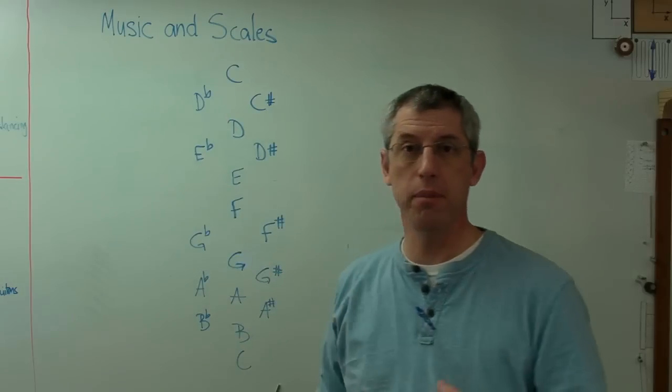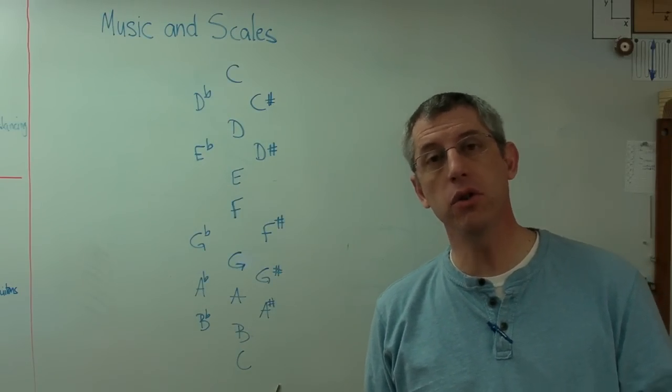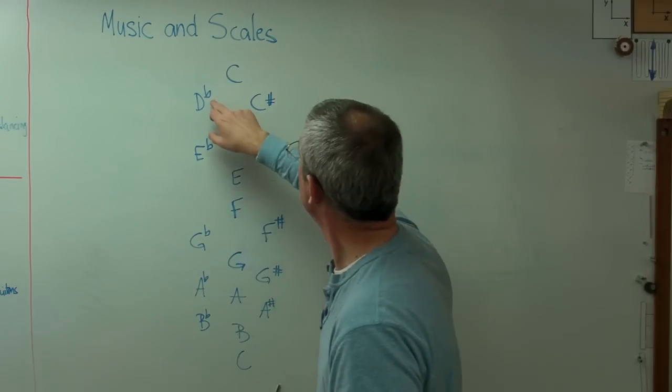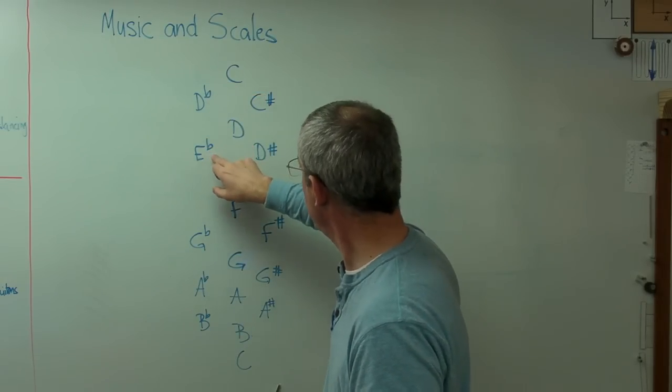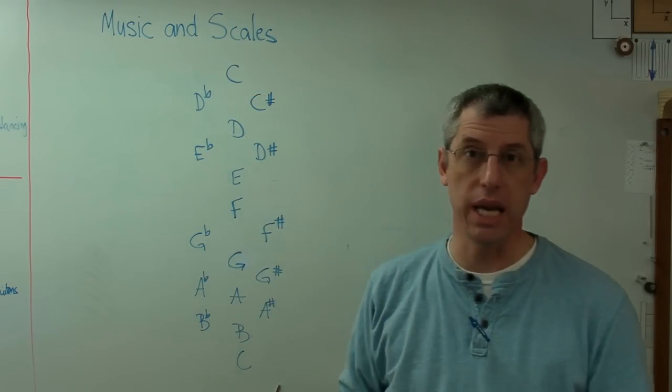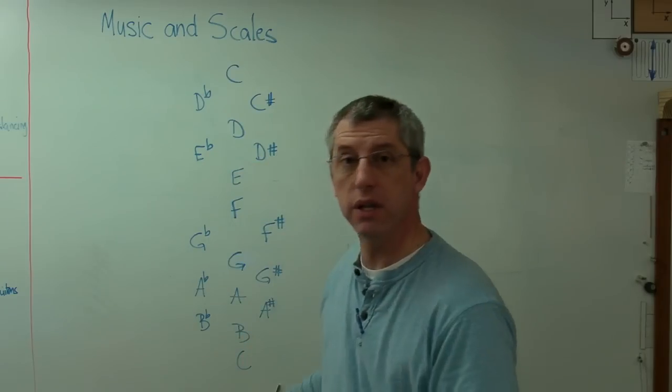This little italic B-looking thing is a flat symbol. And flat is just to lower the note by half-step. So D-flat is a half-step below C. E-flat is a half-step below D. And the way I've got it written, the pitches, the frequencies are increasing as we go down.